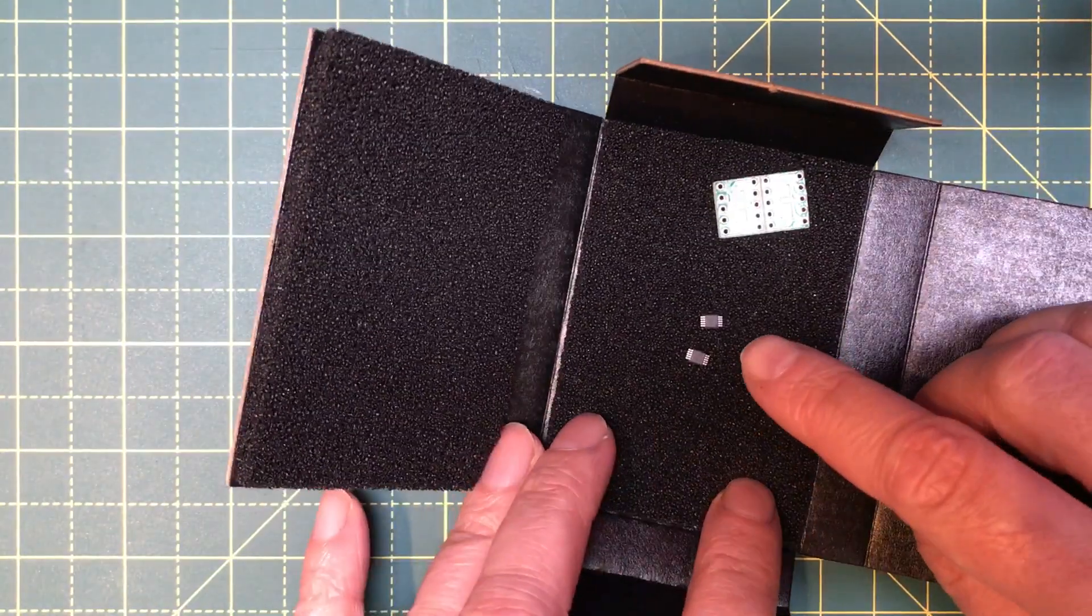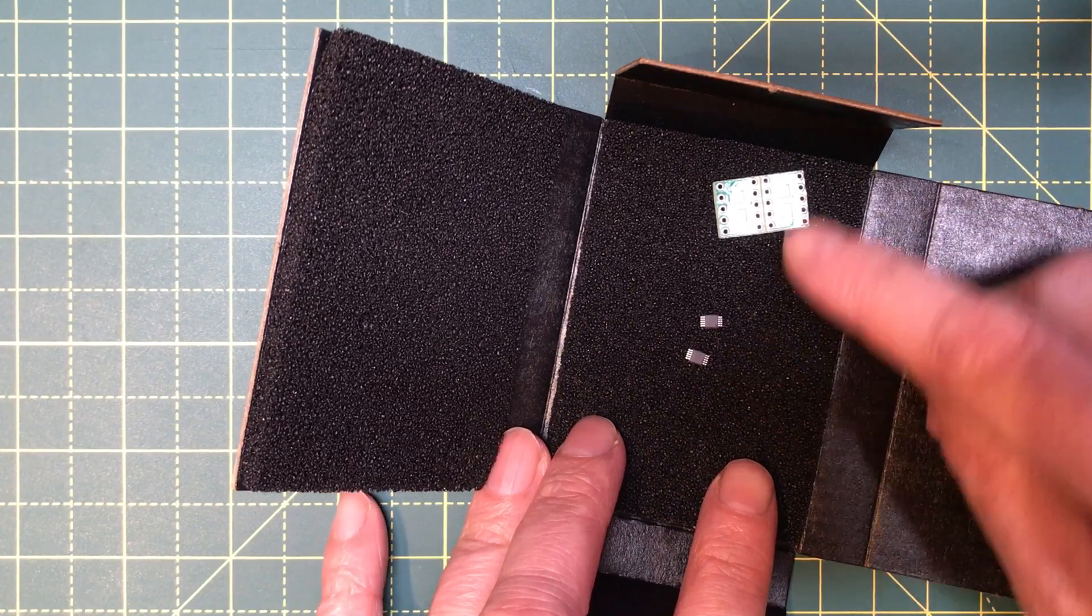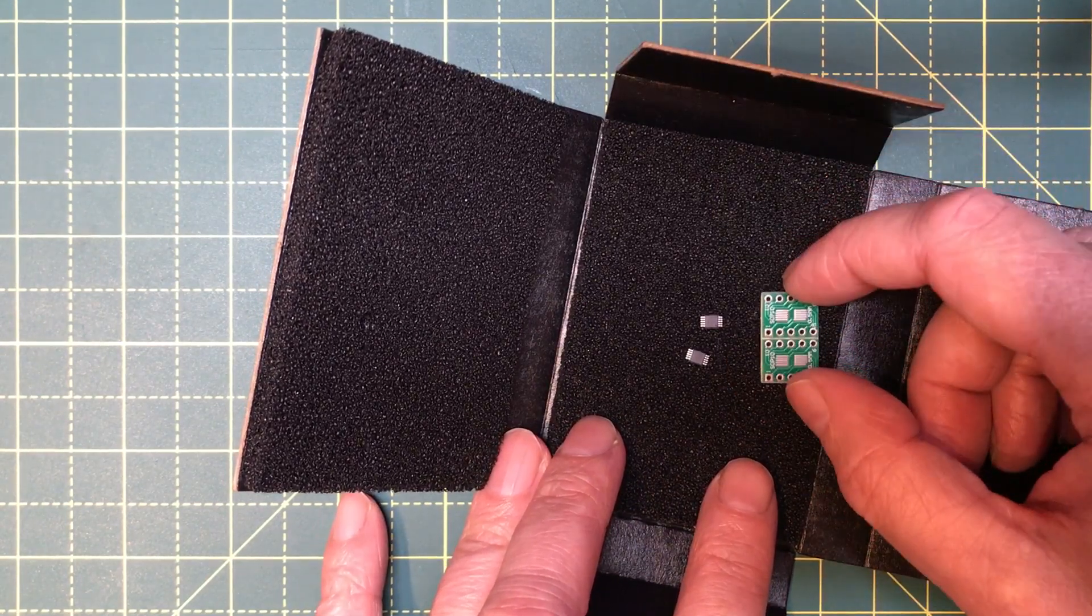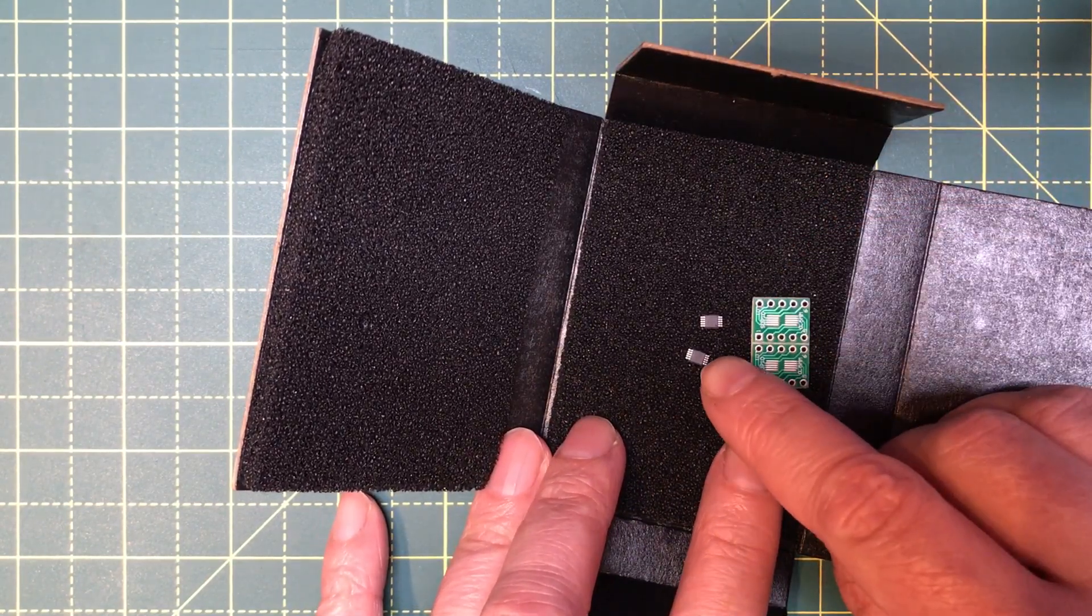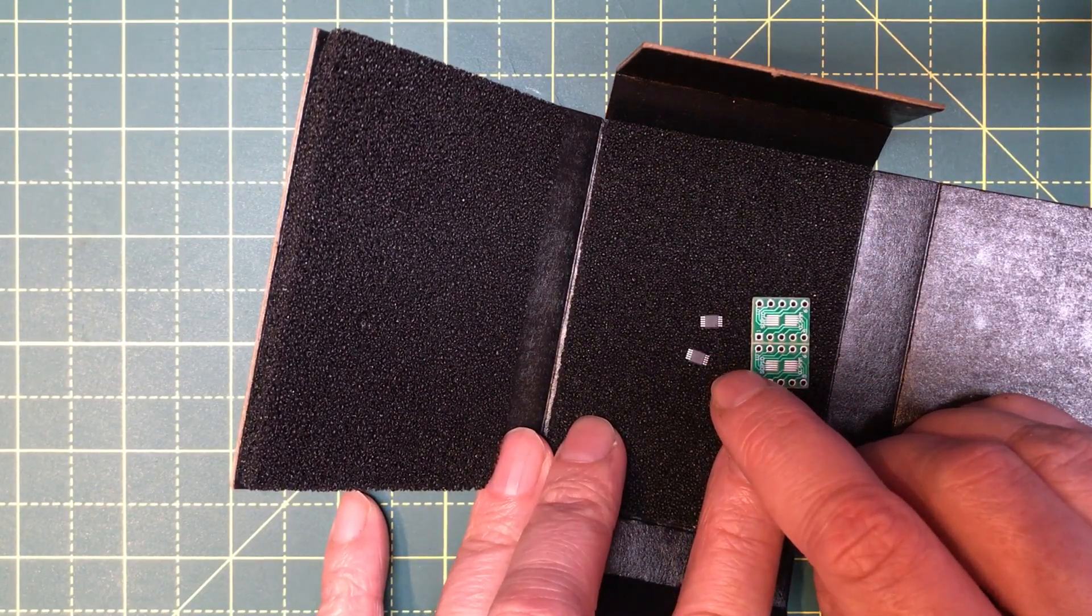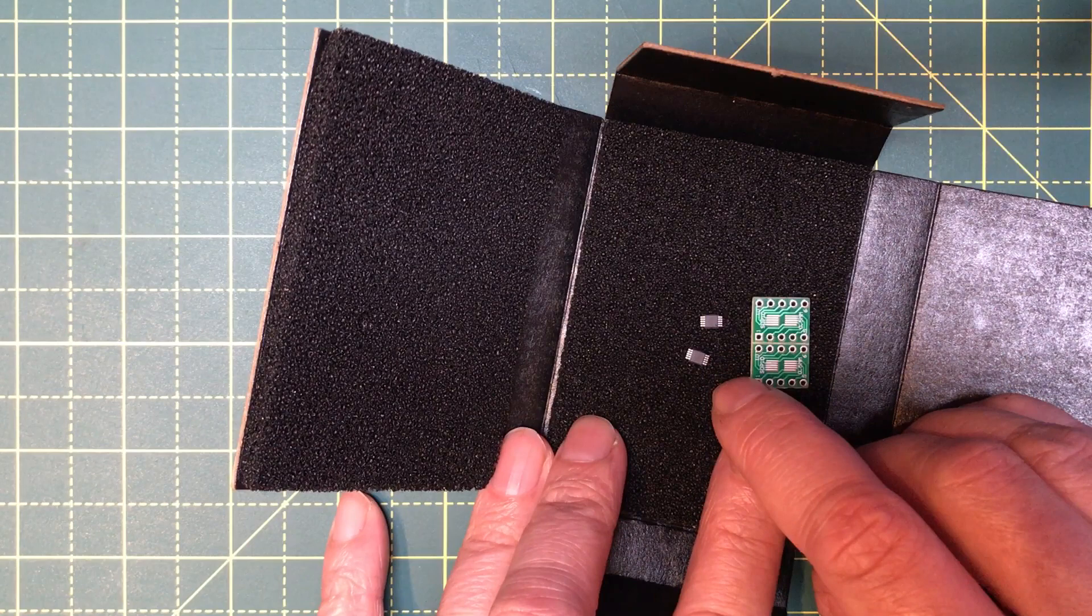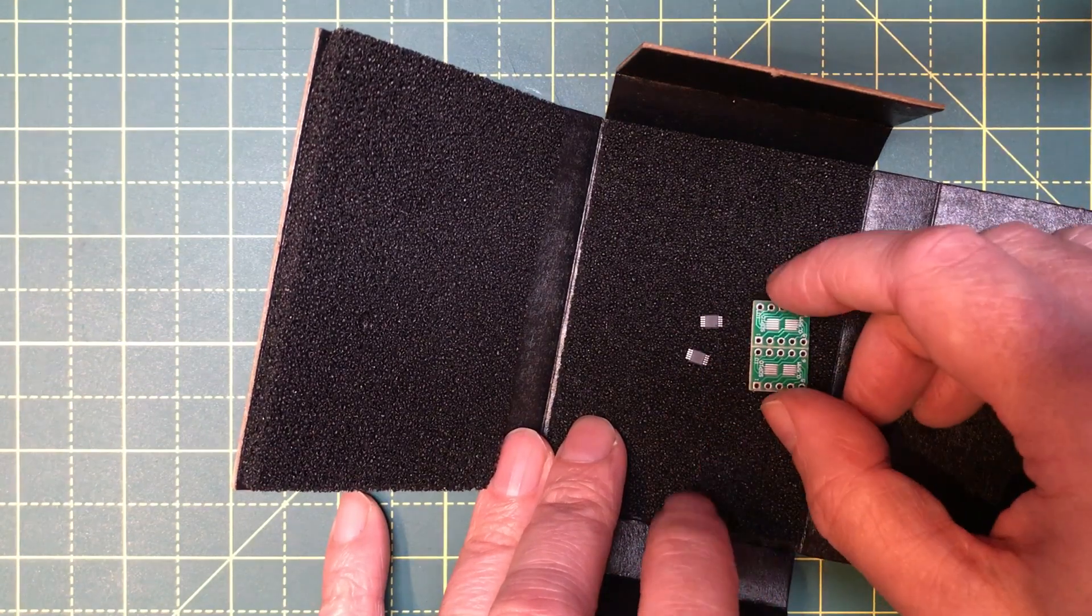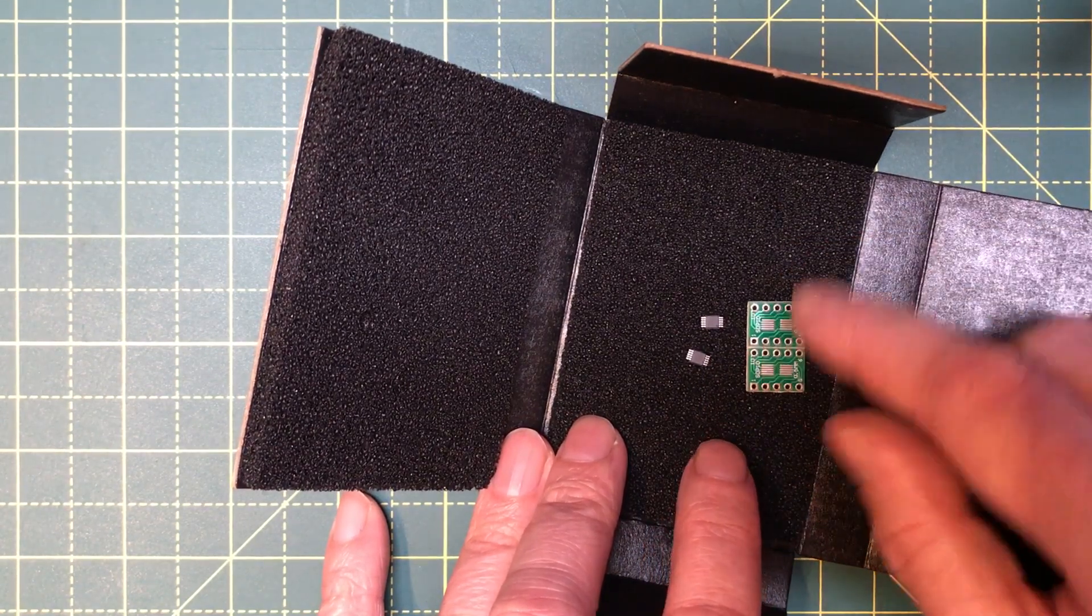But I do have another little chip here, and an adapter board that I want to use in order to do some breadboard experimentation. Now this is a DS139, it's an SPI real-time clock chip. So let's see if I can get that onto this little board.